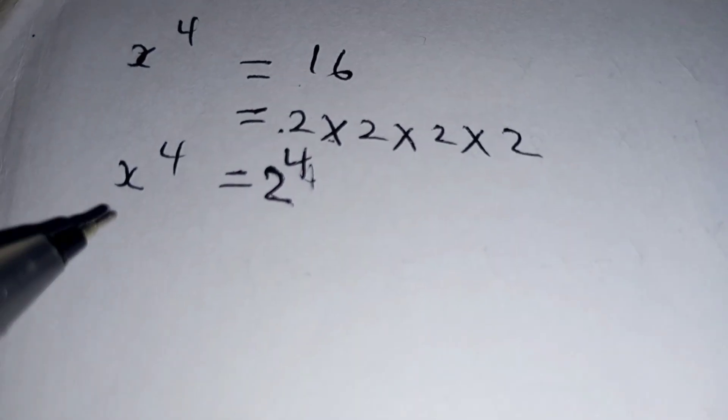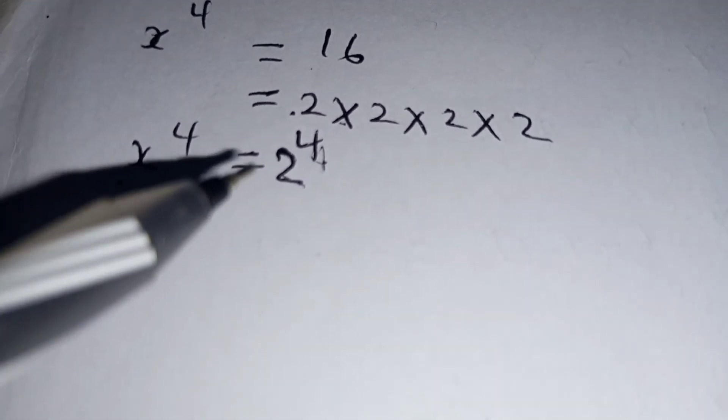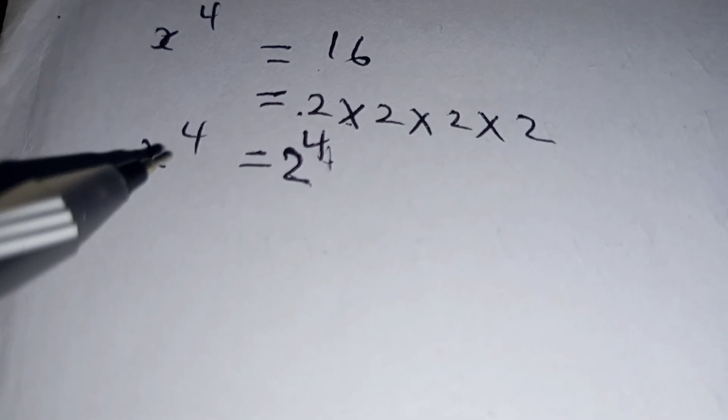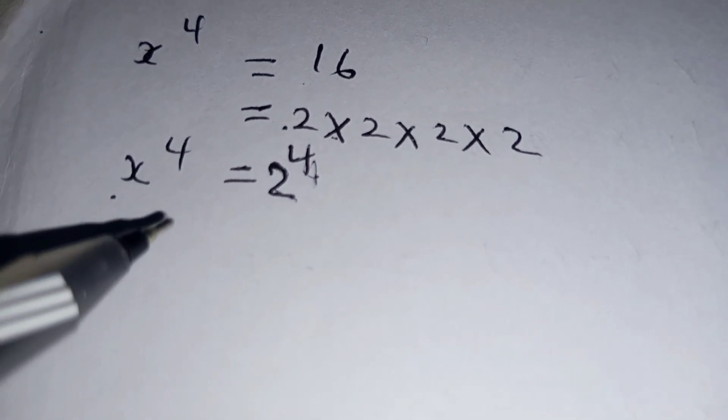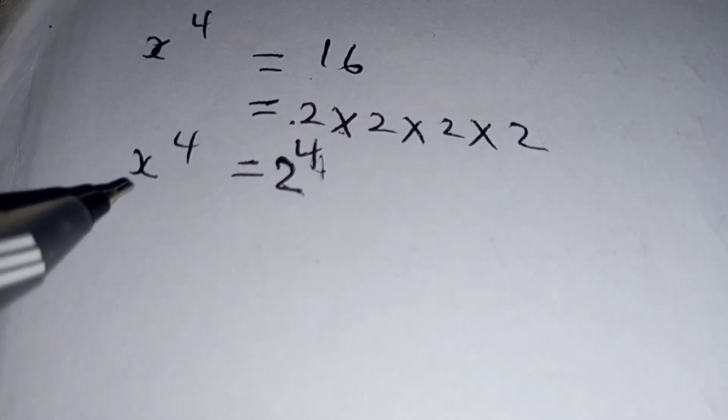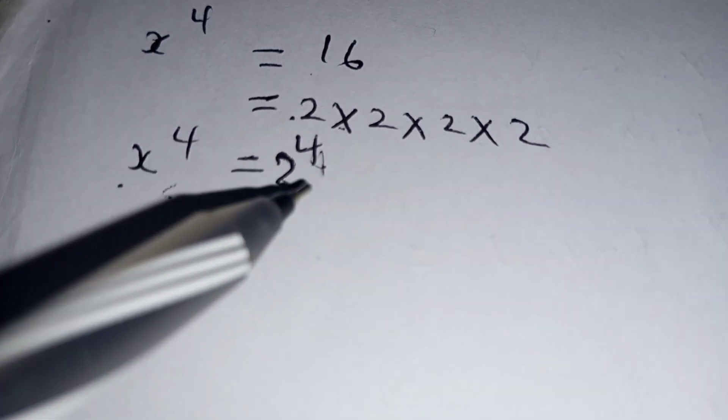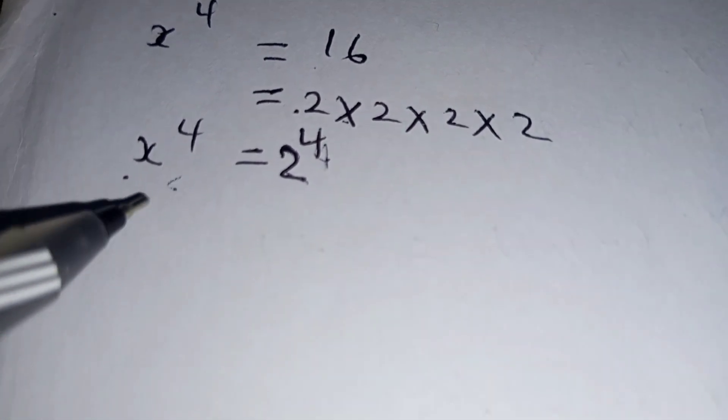So on the left hand side we have x^4 = 2^4. In this equation you can see the indices are the same, and the question requires you to obtain the value of x. So since the indices are the same, it implies that the value of x is equal to 2.